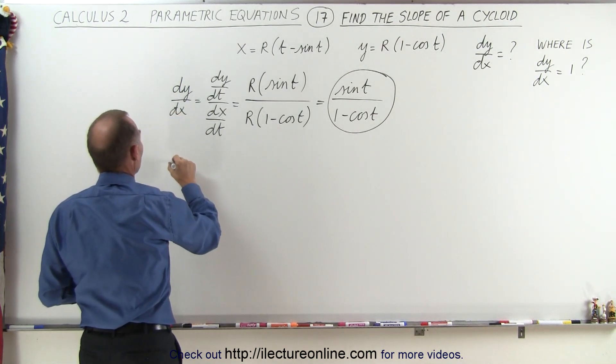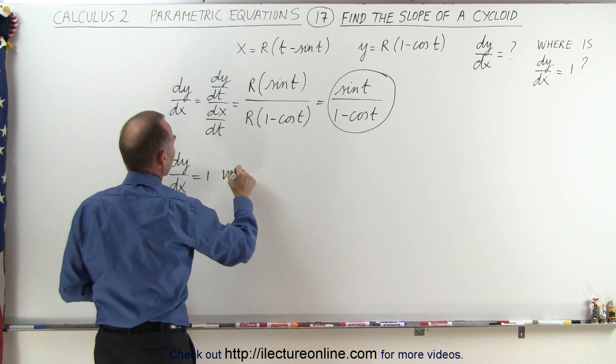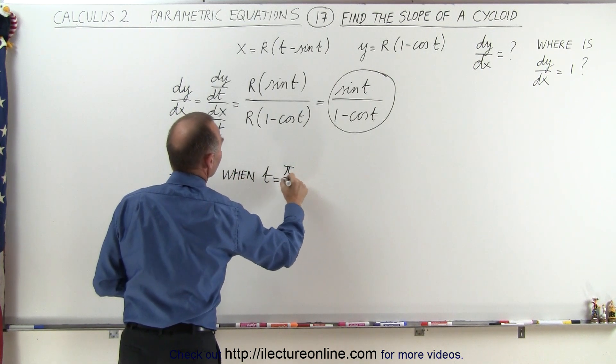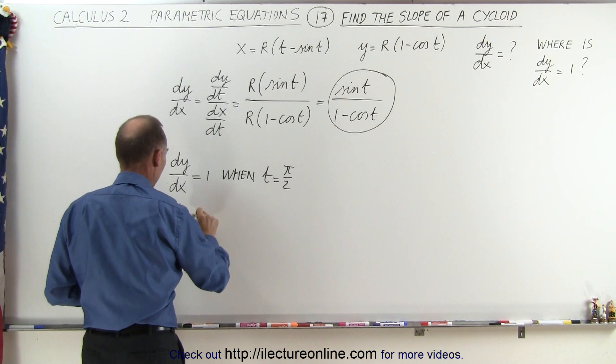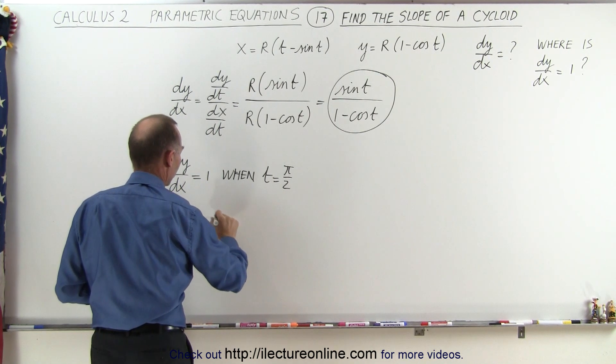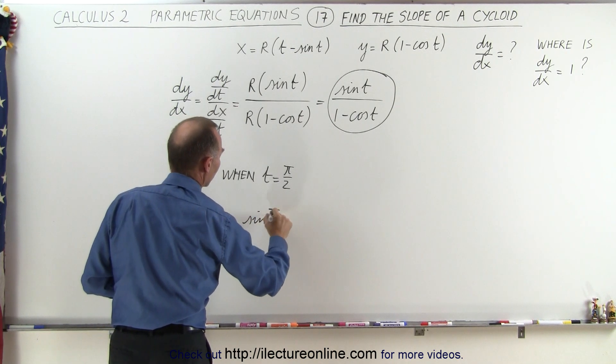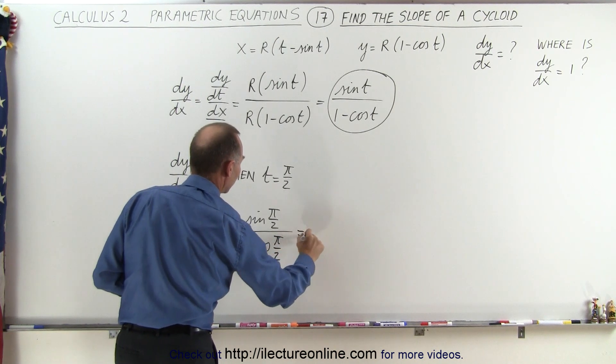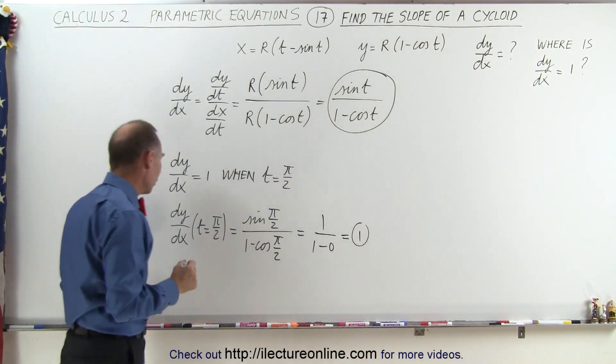So we can say that dy dx is equal to 1 when t is equal to pi divided by 2, because dy dx when t is equal to pi over 2 is equal to the sine of pi over 2 divided by 1 minus the cosine of pi over 2, which is equal to 1 divided by 1 minus 0, which is 1. And that's what we're looking for.